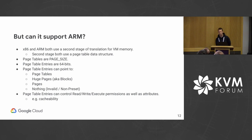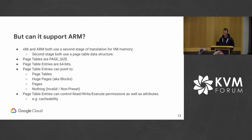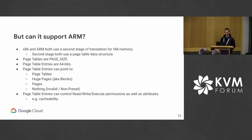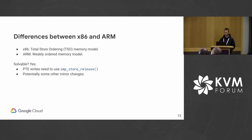Can the x86 TDP MMU actually support ARM, or is it just architecture-neutral code that only gets used on x86? Both x86 and ARM use TDP — a second stage of translation for VM memory using a page table data structure. The page tables are page-sized, page table entries are 64 bits, and each entry can point to a lower-level page table, a huge page, a page, or nothing. Page table entries can control read, write, execute, and other attributes. But there are some major differences between x86 and ARM relevant to TDP paging.